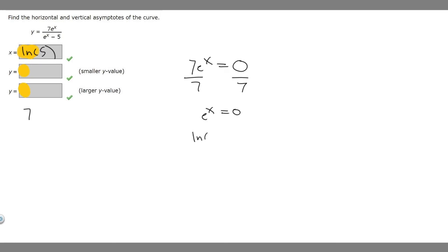Then if we take the ln of both sides, ln of e to the x is going to be equal to the ln of 0. And then we're going to get these cancelled, so x equals the ln of 0. But what you can realize is that the ln of 0 doesn't exist, right? Because the natural log, its domain is only for positive numbers, so this doesn't exist.